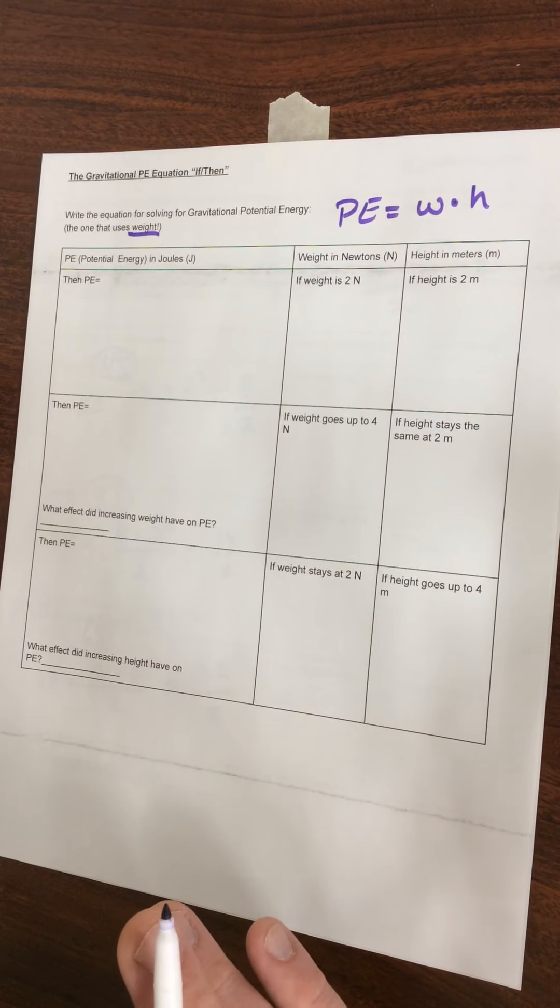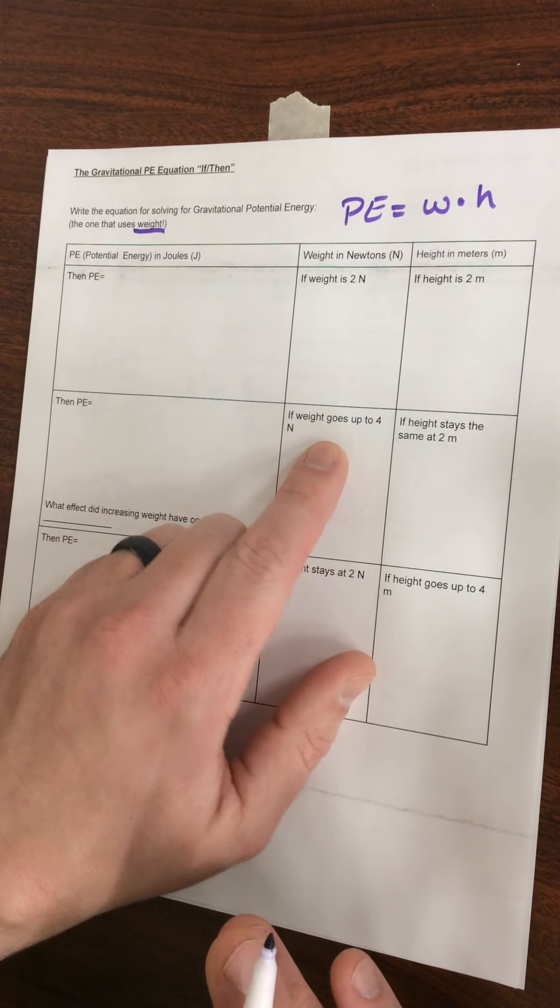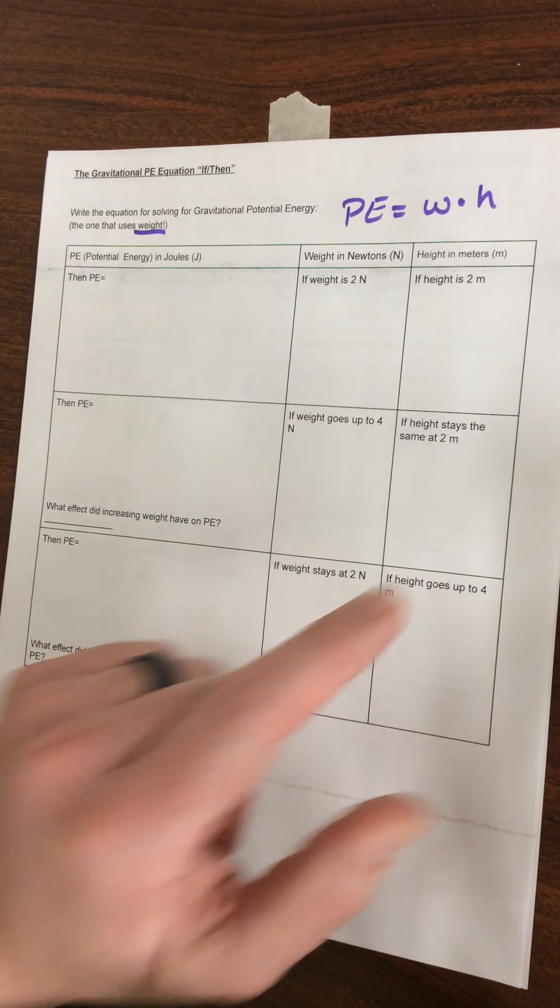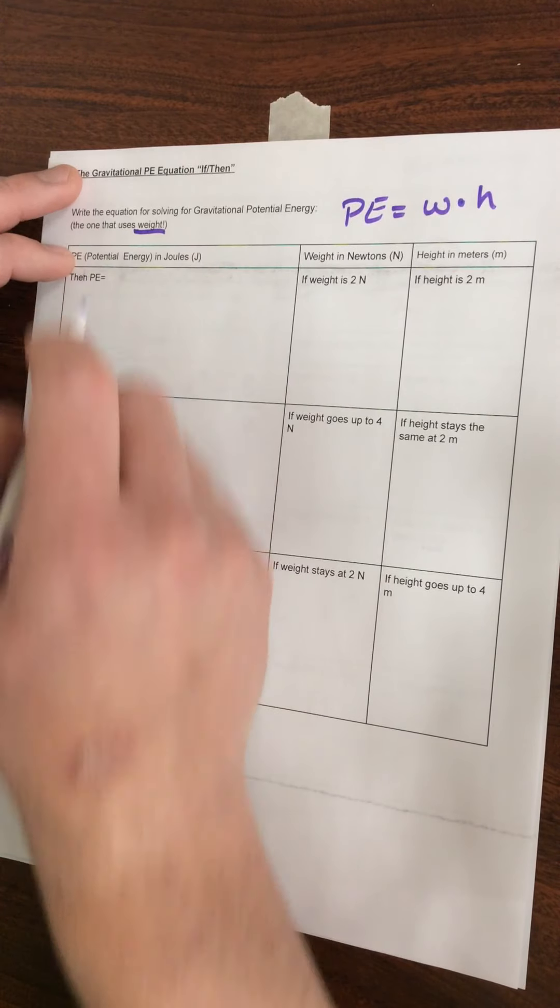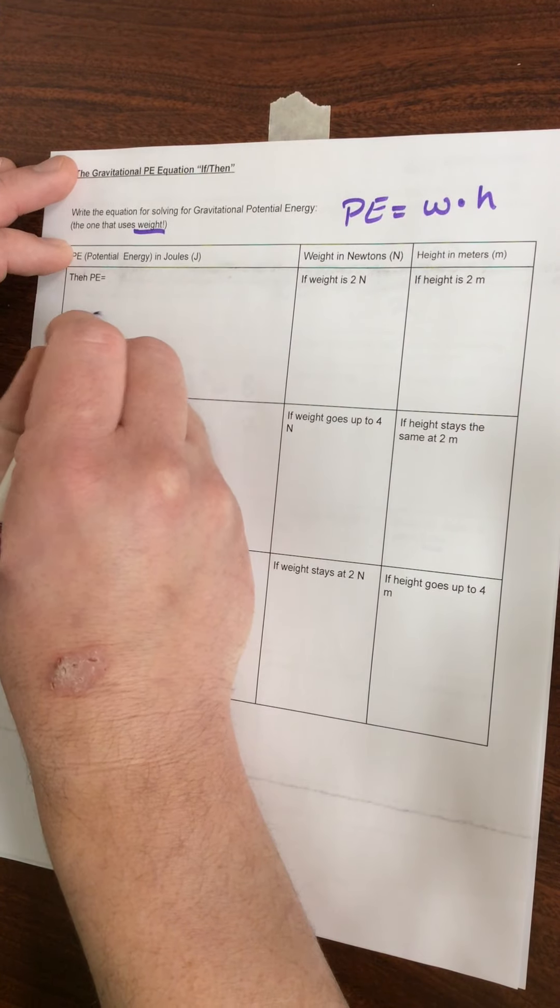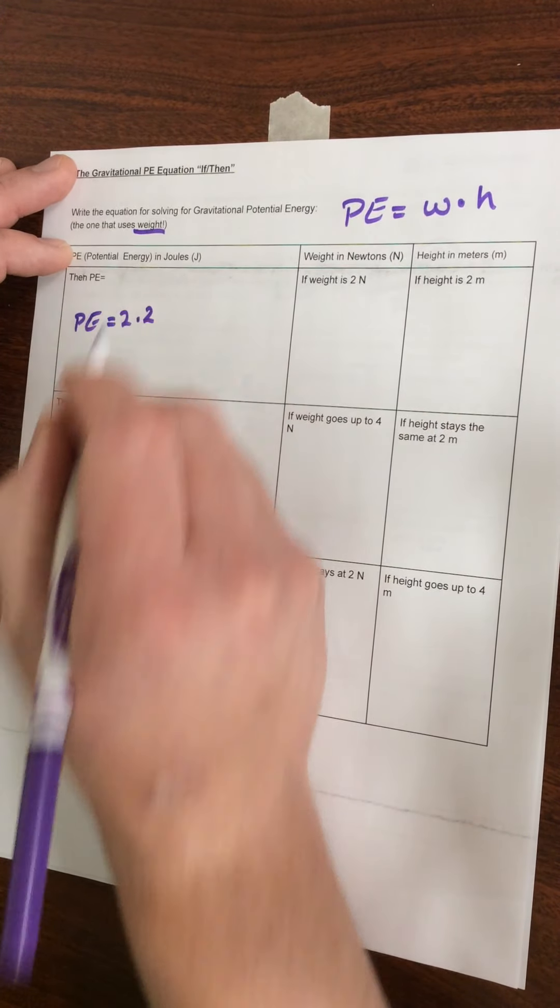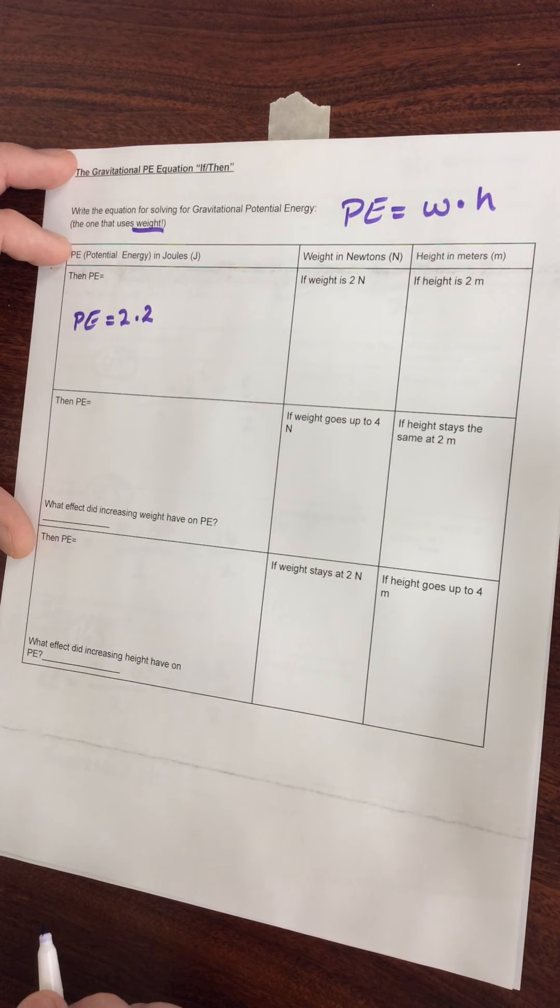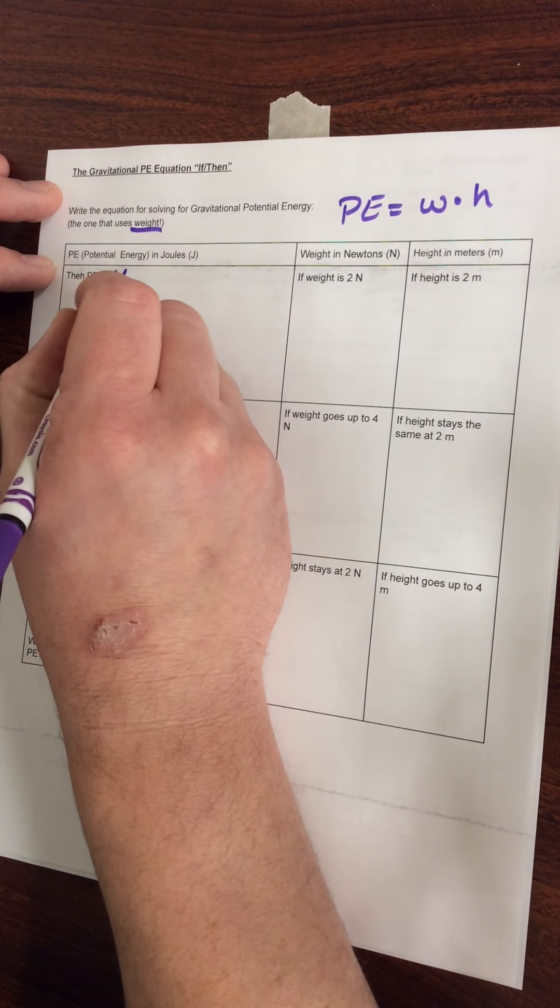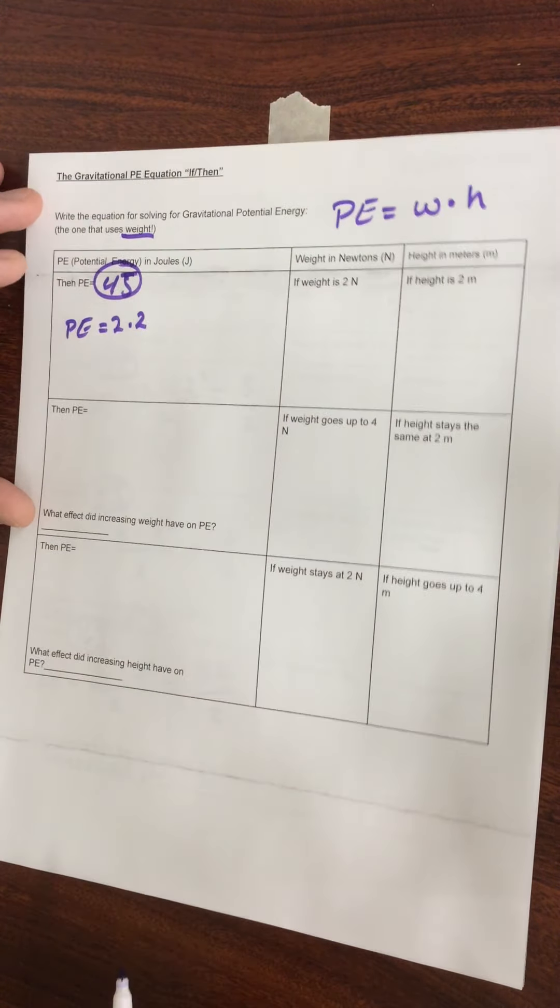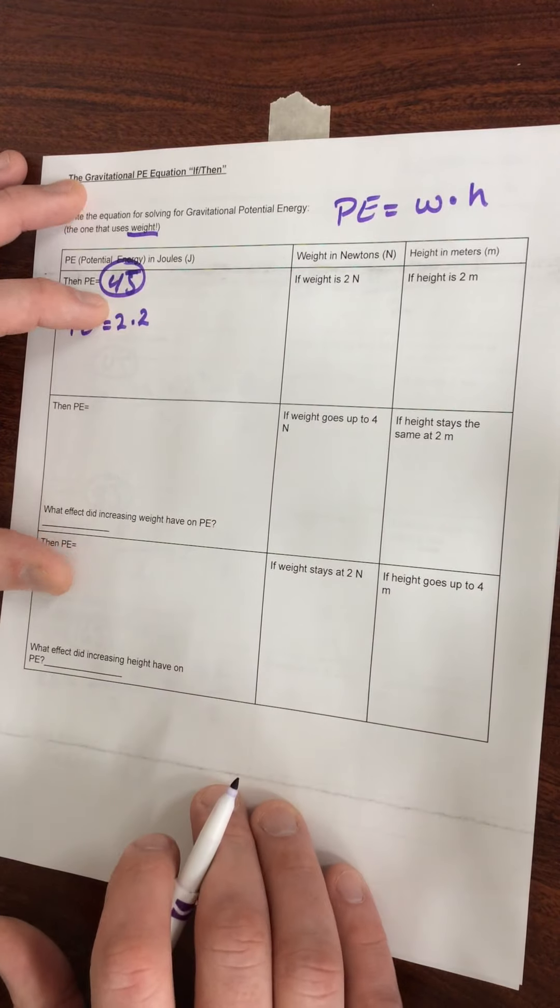We're going to do the same thing we did on the last sheet. We're going to look at potential energy in one equation, and then we're going to change the weight and then change the height and see what impact that has on our potential energy. To start out with, our PE is weight, which is two, times two. Two times two is four joules. We're going to compare that to the next two problems.